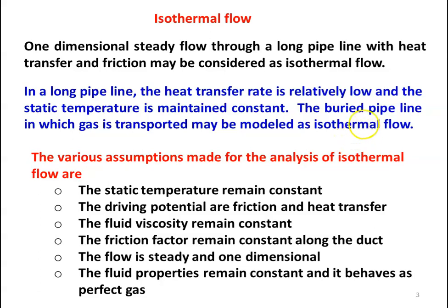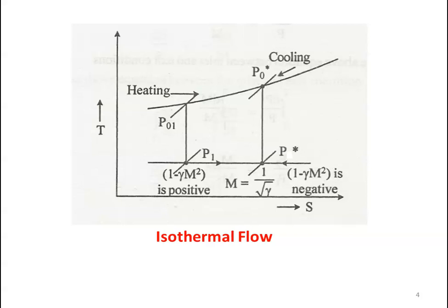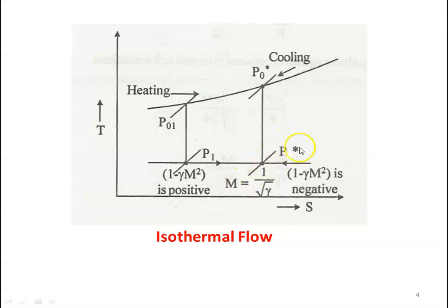These are the assumptions for isothermal flow, and this diagram represents the isothermal flow on a temperature-entropy diagram. The process is indicated by a horizontal line. Entropy is increasing towards point 1 on one side and decreasing towards point 1 on the other side — this is the limiting condition. Like Fanno flow and Rayleigh flow, we have a limiting condition where the Mach number equals 1 divided by the square root of gamma. P* is the choking pressure.